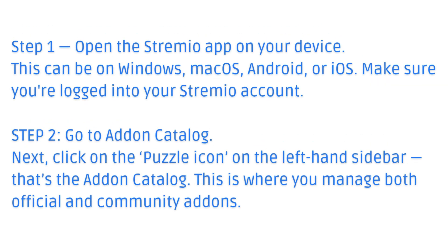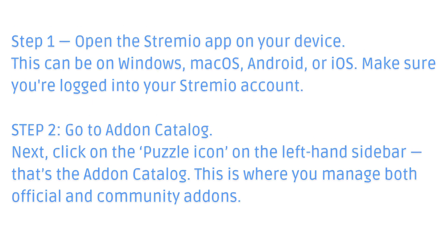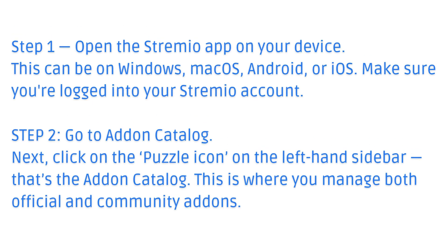Step 2: Go to Add-on Catalog. Click on the Puzzle icon on the left-hand sidebar — that's the Add-on Catalog. This is where you manage both official and community add-ons.